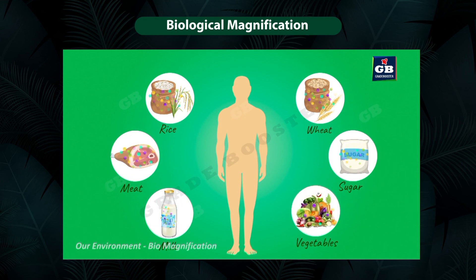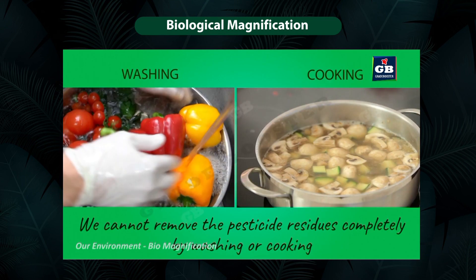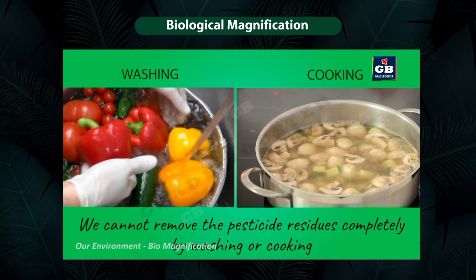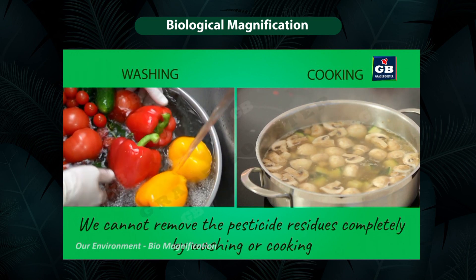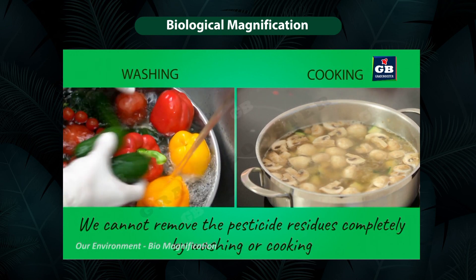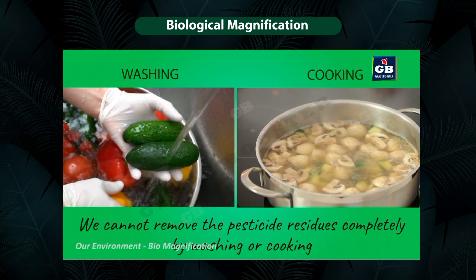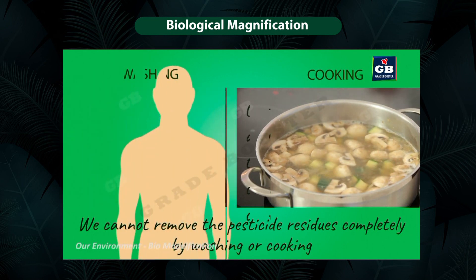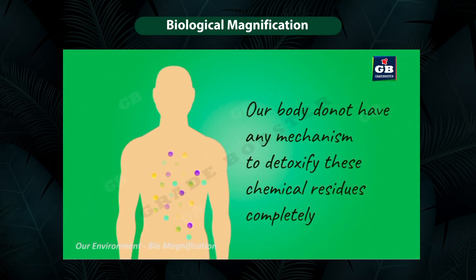Every day we use many food ingredients like rice, wheat, sugar, milk, meat, and vegetables. All these things we source from either plants or animals. Pesticide residues from these ingredients enter our body. Even though we wash our food ingredients thoroughly and even though we cook them properly, we cannot completely remove the pesticide residues from them. Unfortunately, our body cannot detoxify these chemical residues completely, and our body cannot excrete them either. Hence they remain in our body and cause various health problems.